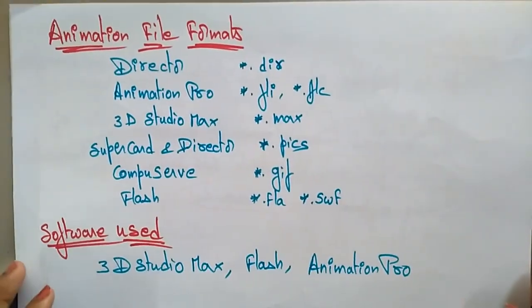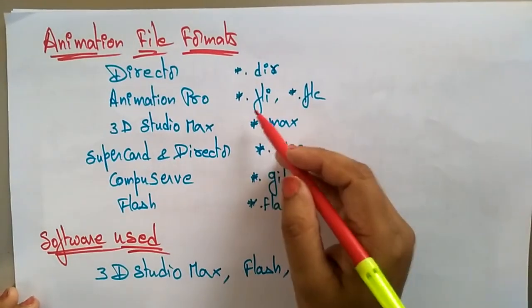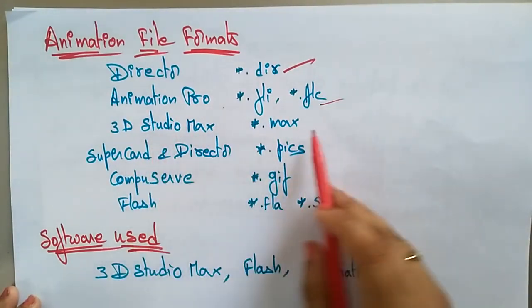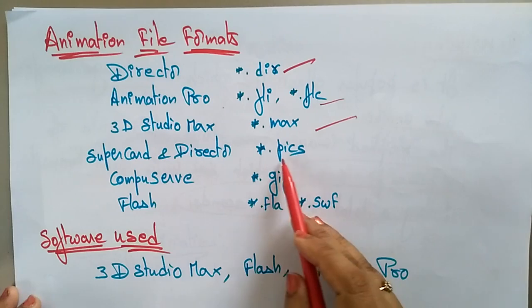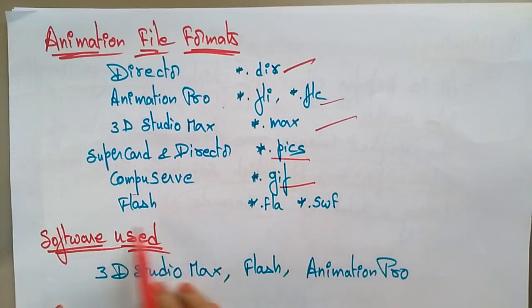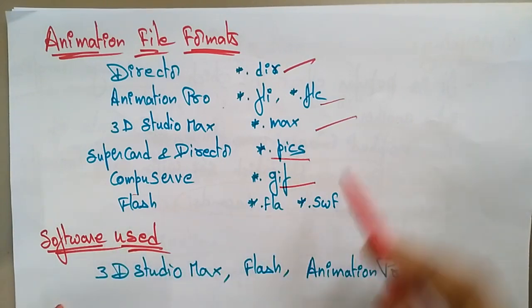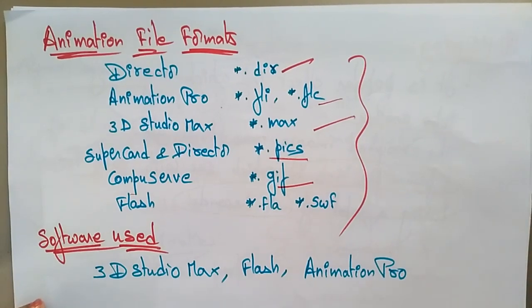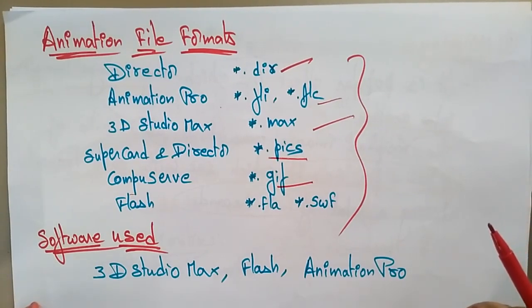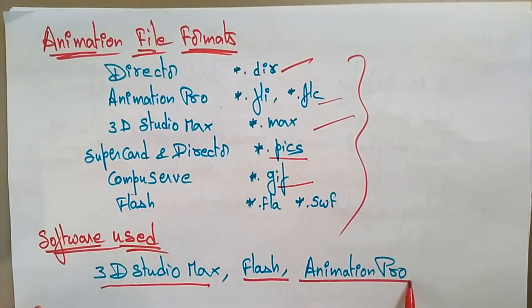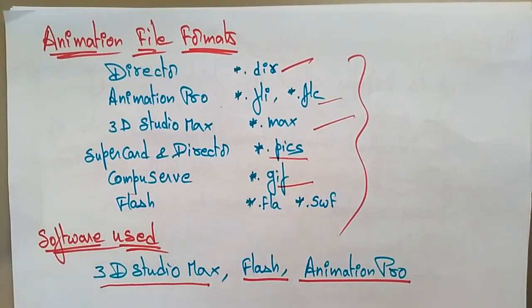These are the different animation file formats: Director (.dir), Animation Pro, 3D Studio Max, SuperCard. The file format for GIF is .gif and for Flash is .fla. These are the different file formats of animation. The software used for animation includes 3D Studio Max, Flash, and Animation Pro — these are the famous software tools used for animation. Thank you.